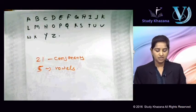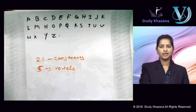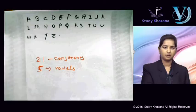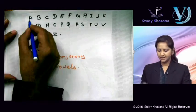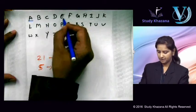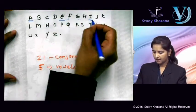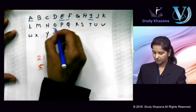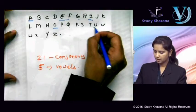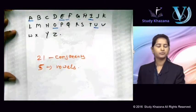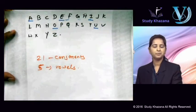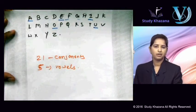Vowels kise kaha jaayega? In traditional grammar, A, E, I, O, and U — inhe kahenge hum vowel.